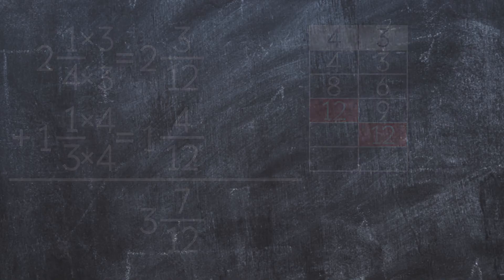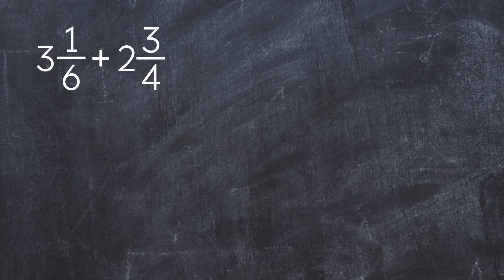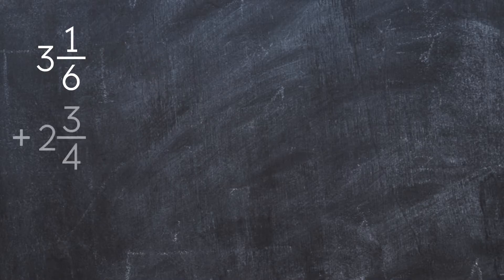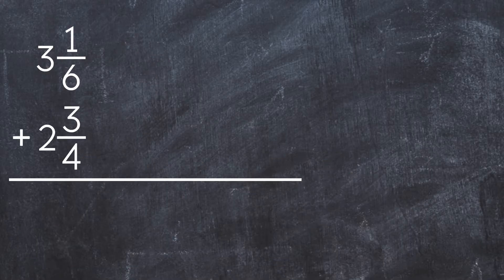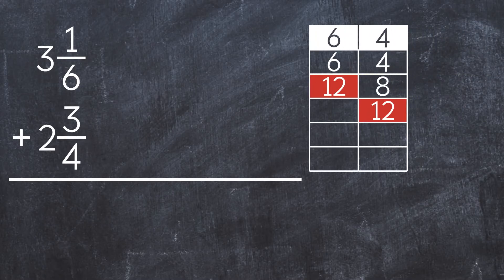Let's do another example: 3 and 1 sixth plus 2 and 3 fourths. Let's turn it into stacked form. First, we find the common denominator. The common denominator between 6 and 4 is 12.